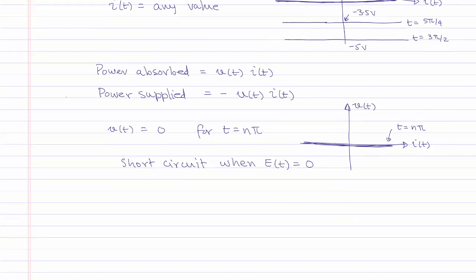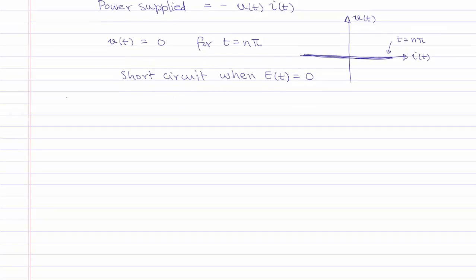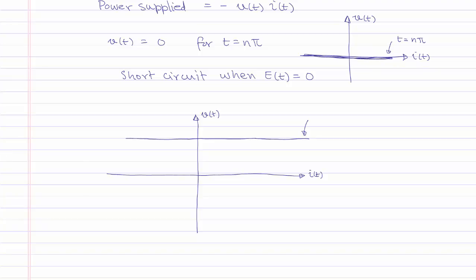The source considered so far is an ideal voltage source. The characteristics of an ideal source show that the voltage is constant or known, and the current can have any value. In the right half plane, where the current is greater than or equal to 0, the ideal source is absorbing power. In the left half plane, where the current is less than 0, the source is supplying power.